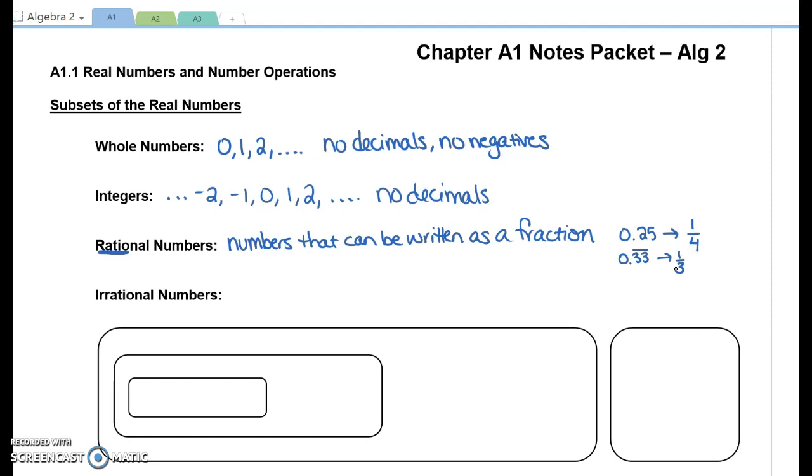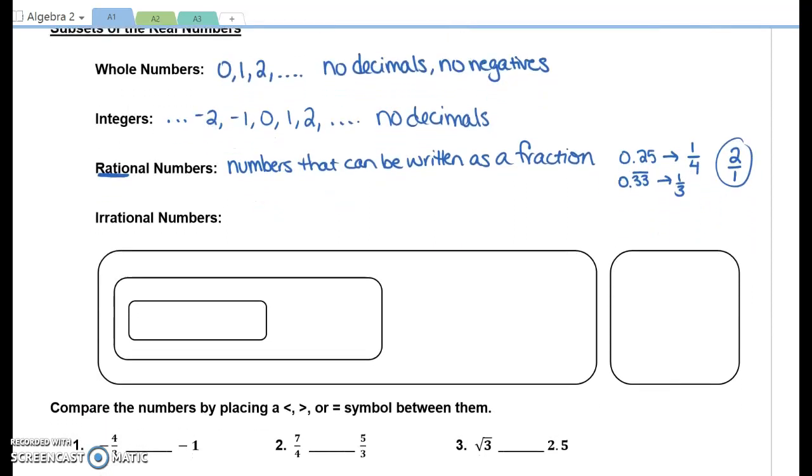Once we've covered whole integers and rationals, I want you to think about the number 2. Could I write 2 as a fraction? I could write 2 over 1 or I could write 4 over 2 because 4 divided by 2 is 2. So 2 is also a rational number. Do you notice that 2 is a rational number? It's also an integer. It's also a whole number. Every single whole number is also an integer. Every single integer is also a rational number.